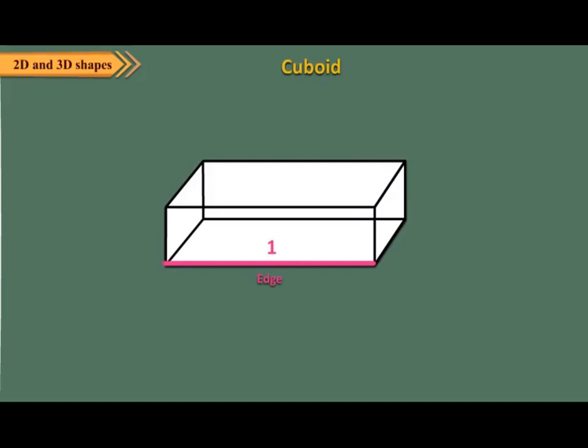A cuboid has 12 edges. The point where three edges meet is called a vertex. A cuboid has eight vertices. A cuboid has six faces.